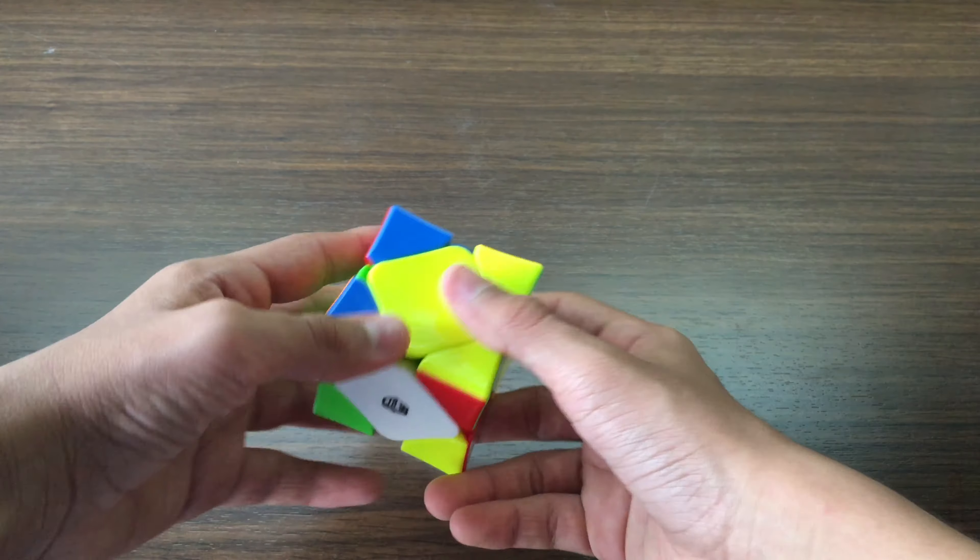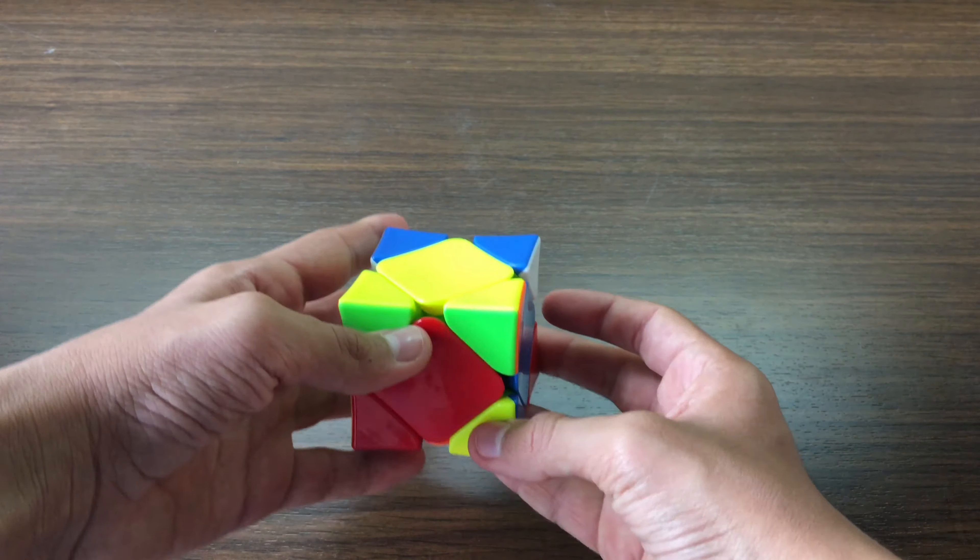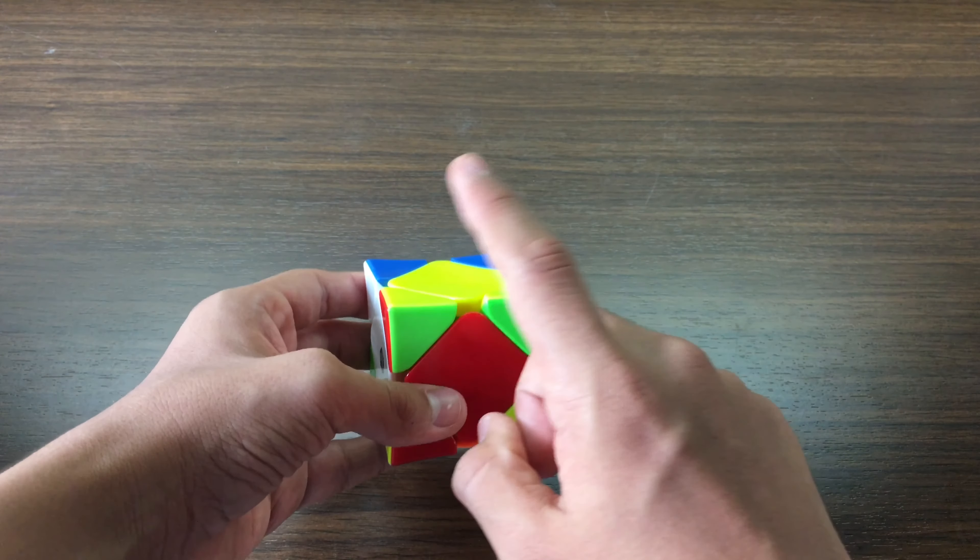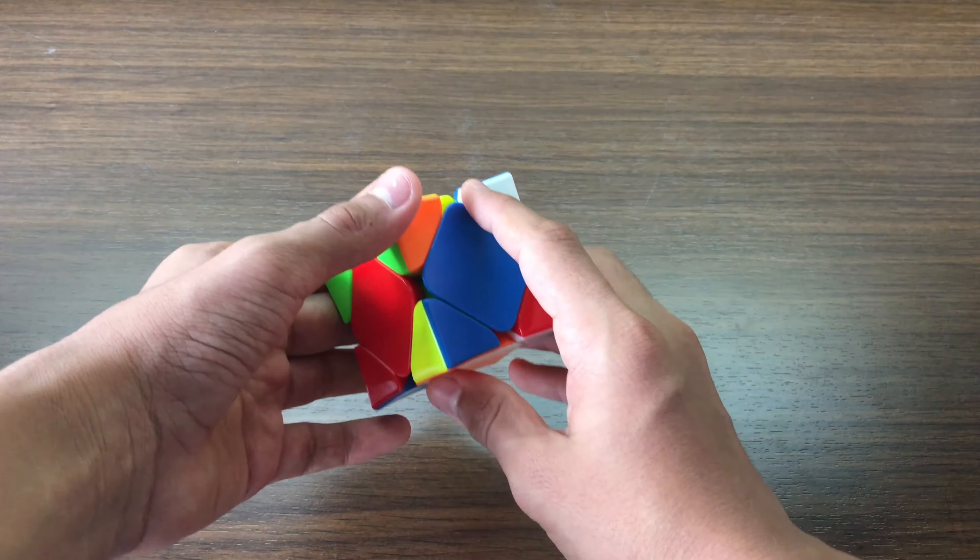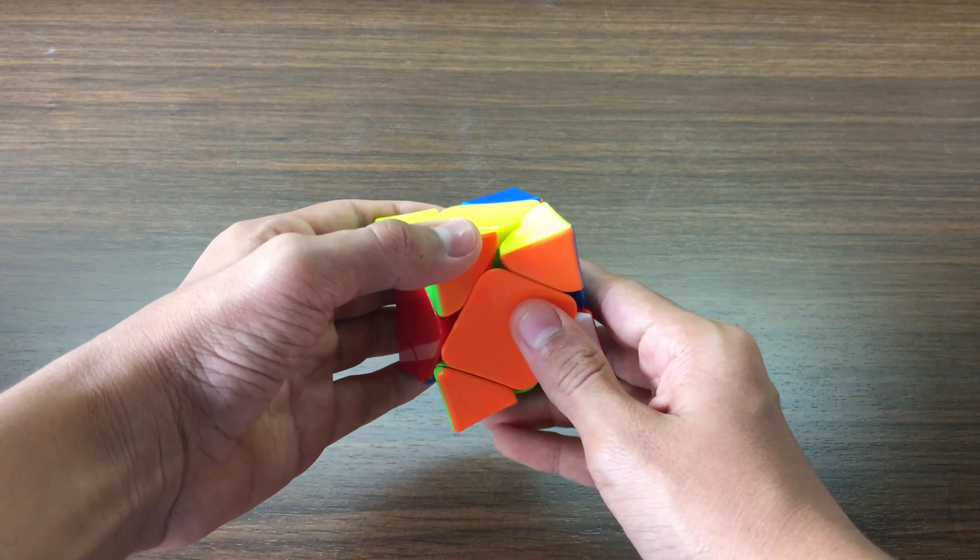So the moment I did the scramble, the first thing I noticed was the yellow because there were two pieces already done in the correct spot and the third one was pretty simple too. So I just put that third